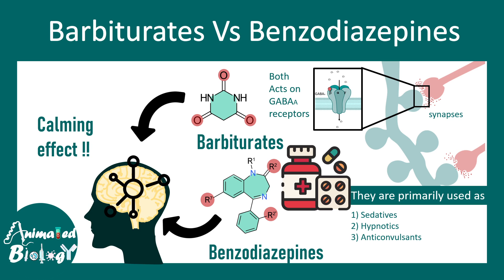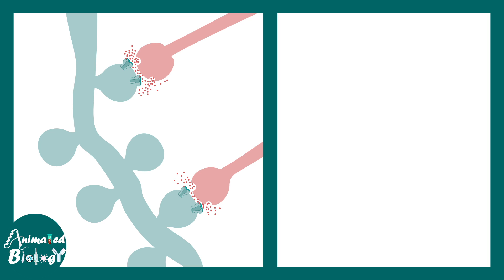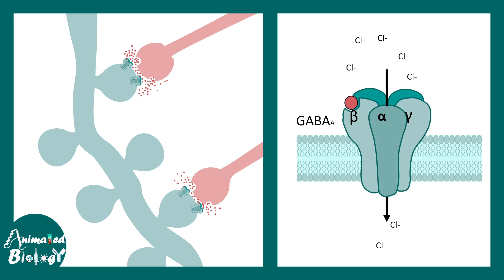Both act on the GABA-A type receptor. GABAergic synapses are inhibitory synapses in the brain. GABA is the neurotransmitter shown here in red, and it binds to GABA receptors. Most commonly, these GABA receptors are ionotropic receptors, which are membrane-bound ion channels.